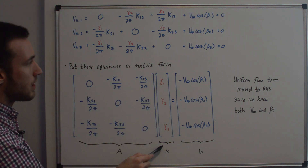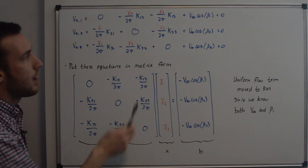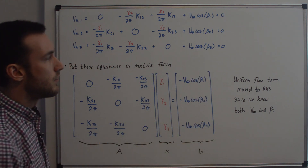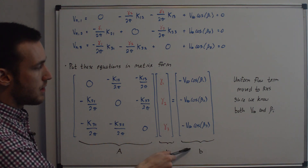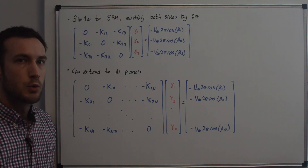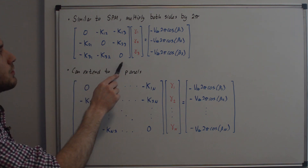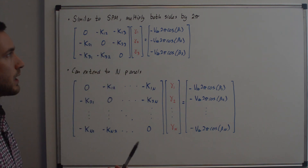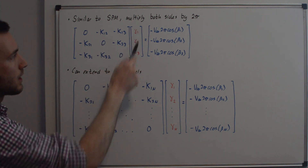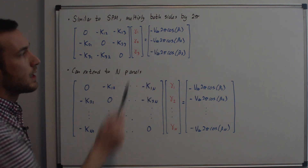The uniform flow terms are moved to the right-hand side since we know both v_infinity and beta_i, so the b array contains minus those terms. Similar to the source panel method, we multiply both sides by 2 pi — so in the A matrix, all the 1 over 2 pi factors cancel, leaving negative k_ij values. The gammas remain as the unknowns, and each term on the right-hand side now has a factor of 2 pi.